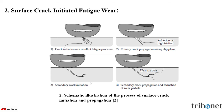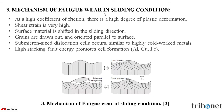Next, let us understand the mechanism of fatigue wear in sliding conditions. This happens mainly due to the following: at a high coefficient of friction there is a high degree of plastic deformation. When shear strain is very high, the surface material is shifted in the sliding direction. The grains are drawn out and oriented parallel to the surface.